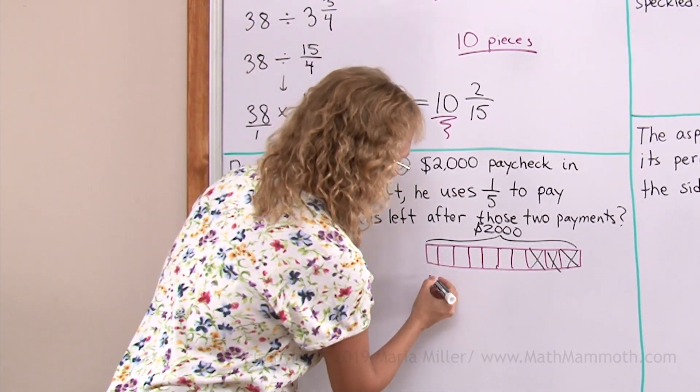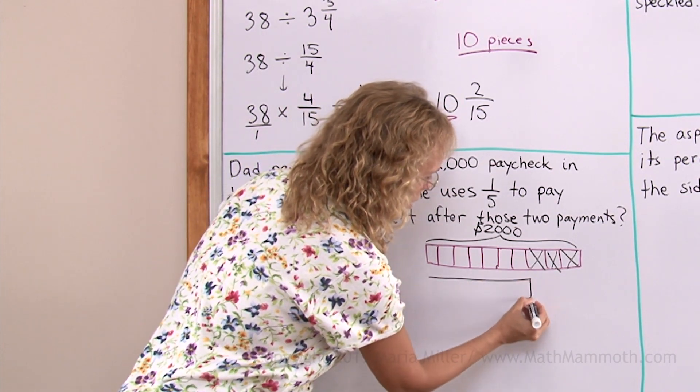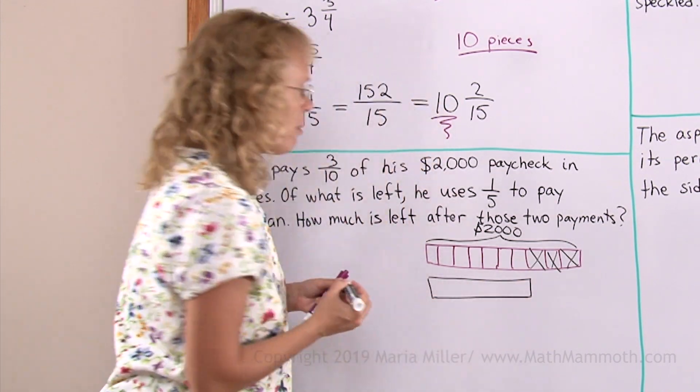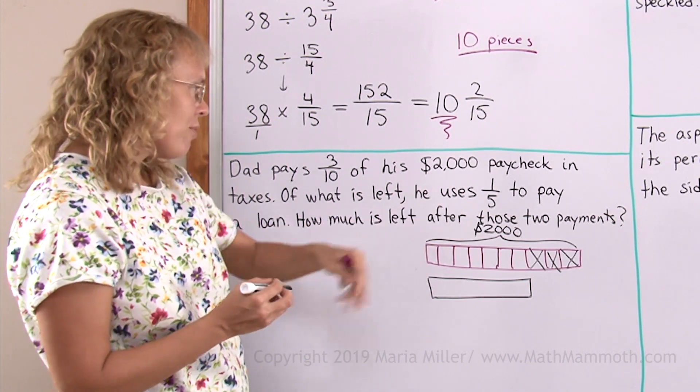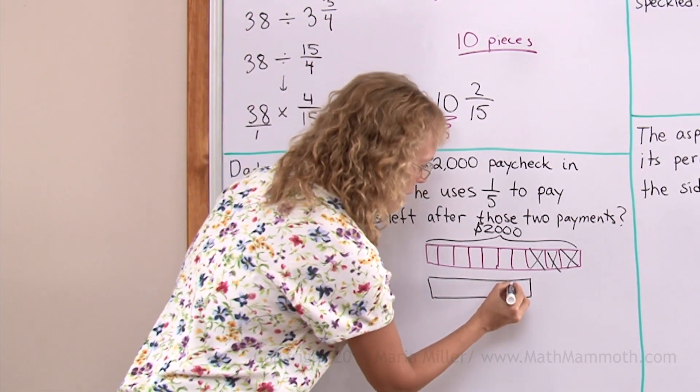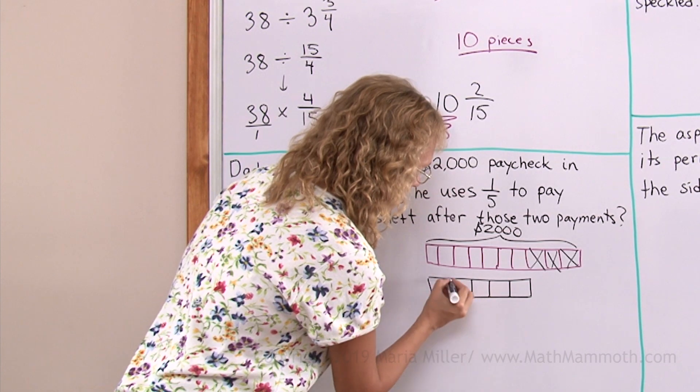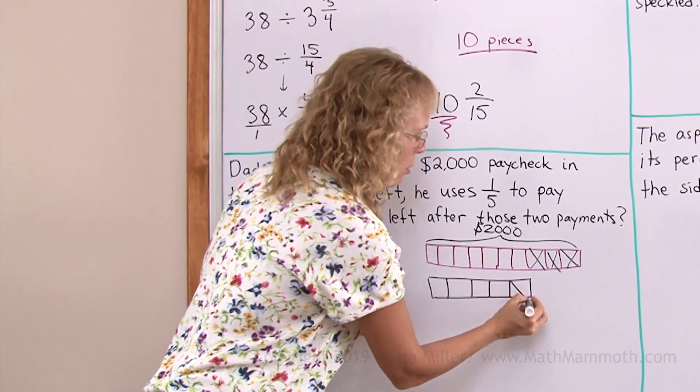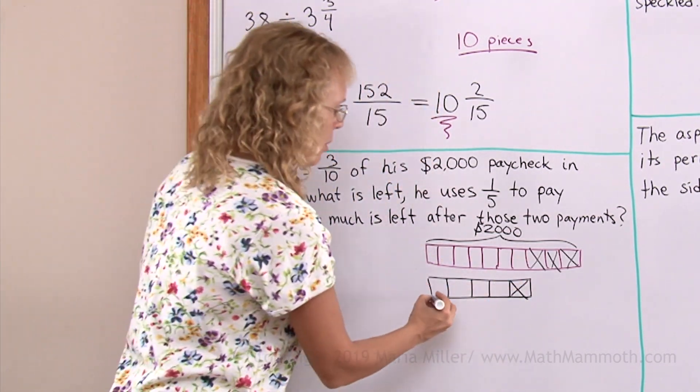So, let me draw that again here. This is like how much he has left after taxes. And now we look at the other situation. He uses one-fifth of that to pay a loan. So this gets divided into five pieces, and then this goes away, and this is how much is left.